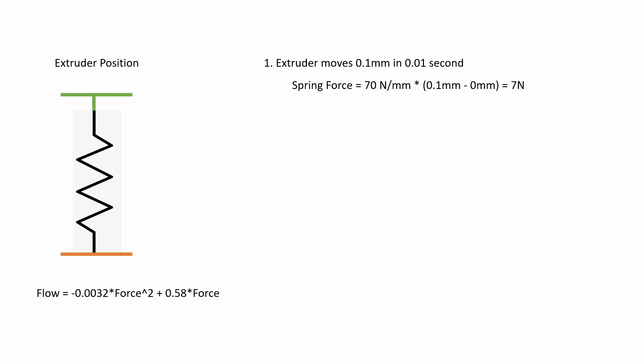So 70 newtons per millimeter times 0.1 millimeters equals a spring force of 7 newtons. From past experience, 7 newtons isn't that much force for an extruder, so we're going to assume that the extruder can maintain its position under 7 newtons of force.